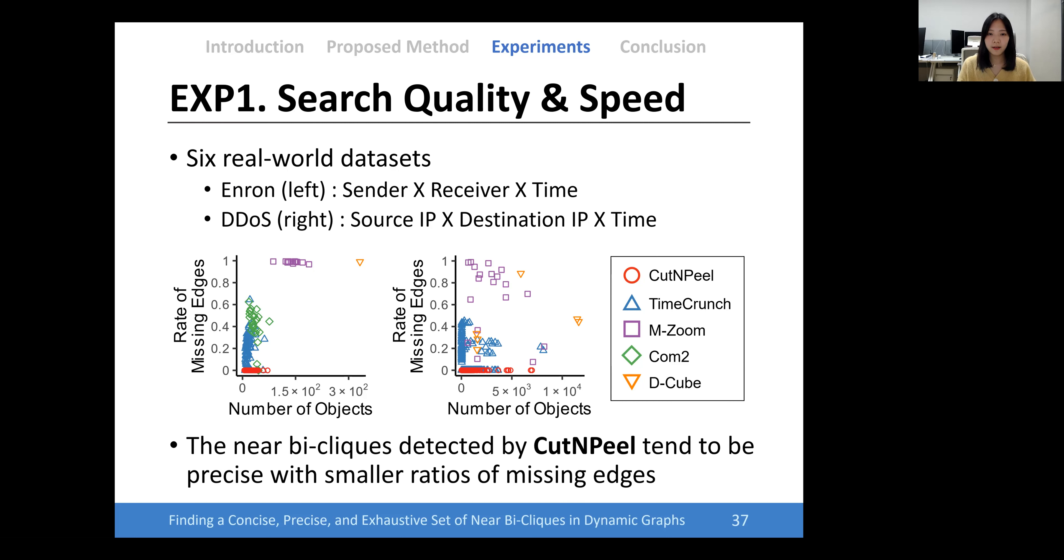Also, we analyzed the size and preciseness of near bi-cliques. In this analysis, the near bi-cliques detected by Cut and Peel tend to be more precise with less error than other methods.